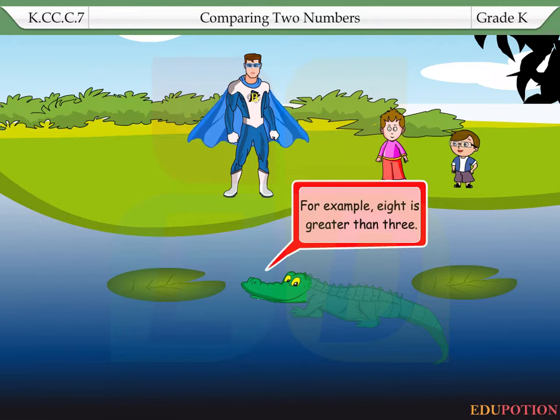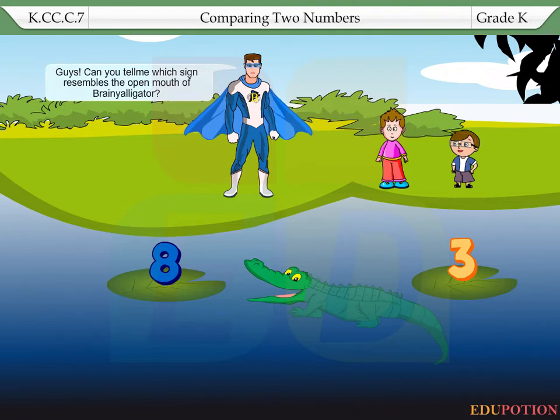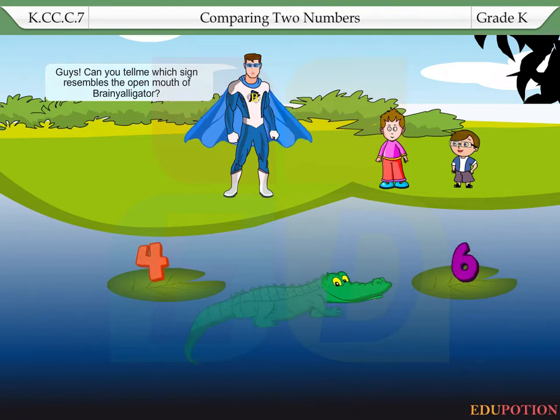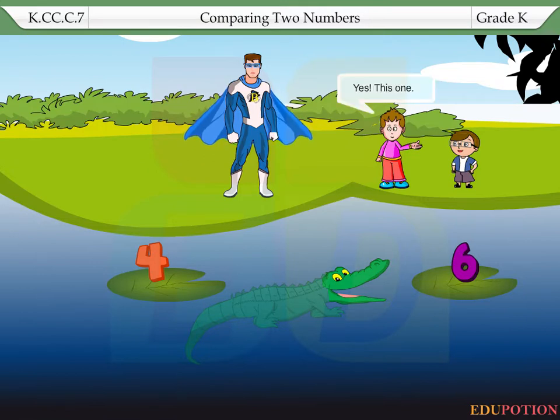For example, eight is greater than three. So I open my mouth towards eight. Guys, can you tell me which sign resembles the open mouth of Brainy Alligator? Jack points his hand towards the number six. Yes, this one.